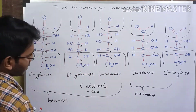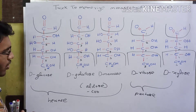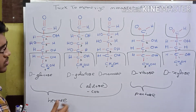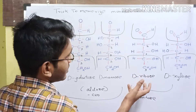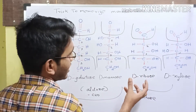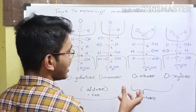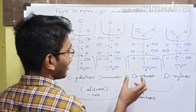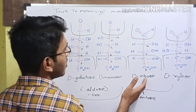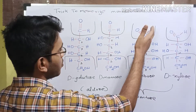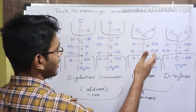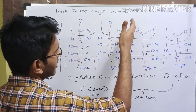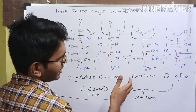Now we are clear with the structures of hexoses. Let us see how to memorize the structure of ribose, which is actually very easy. Ribose has all the hydroxyl groups on the right hand side and hydrogen on the left hand side.